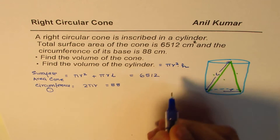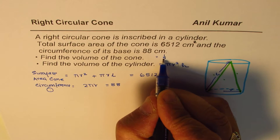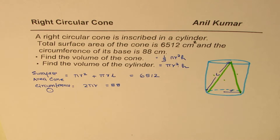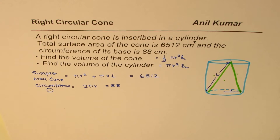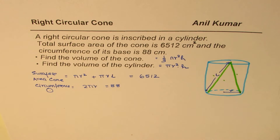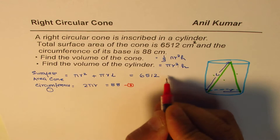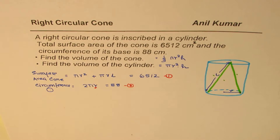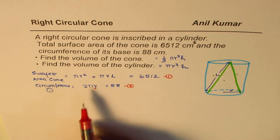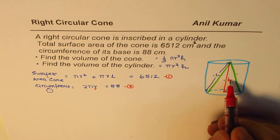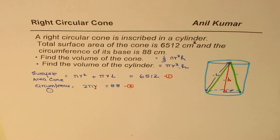And the volume of the cone is one-third of the volume of the cylinder. So that is how all the formulas are related. Our approach here is: from the second equation — which is the circumference equation — we find R. Once we find R, we place it in the first equation to find L (the slant height). After finding L, we use the Pythagorean theorem to find the height, and then we find the volume.